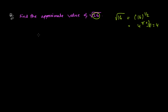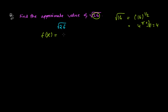To find the approximate value, you need to think of a function that matches the given expression. Our given value is √26, so we suppose a function f(x) = √x. Then we find the derivative: f'(x) = 1 / (2x^(1/2)).